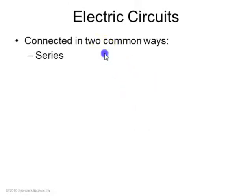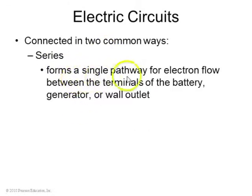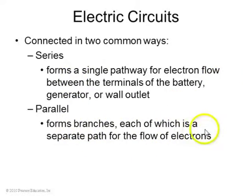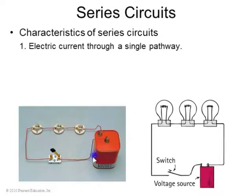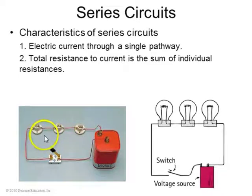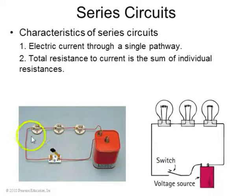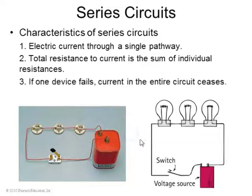Circuits can be connected in two main ways: series, in which there's a single pathway for the current, and parallel, in which there are branches where the current can flow simultaneously through different paths. A series circuit has electric current going through one pathway, and the total resistance to current is the sum of the individual resistances. Here's the plus terminal of the battery, here's a switch, and all three light bulbs are connected in series. If one of these bulbs breaks or a switch is open, then no current will flow.